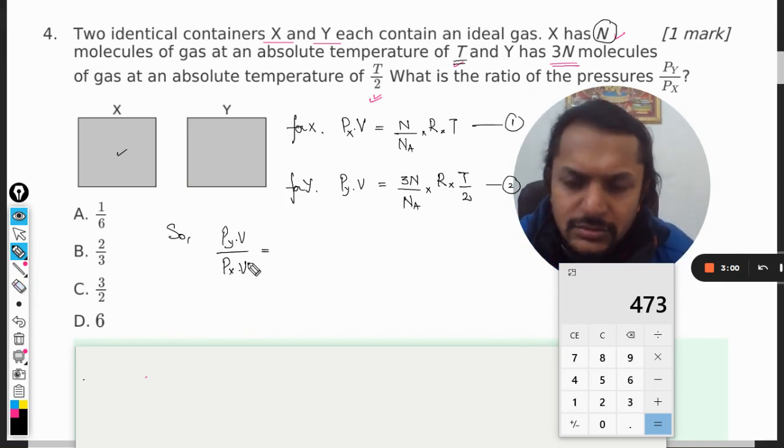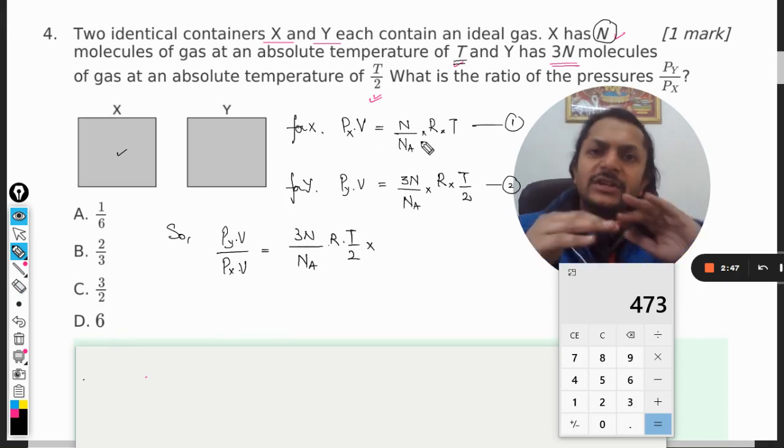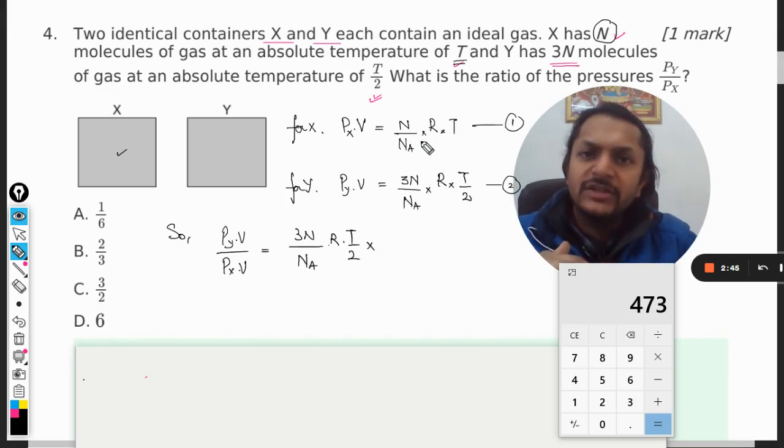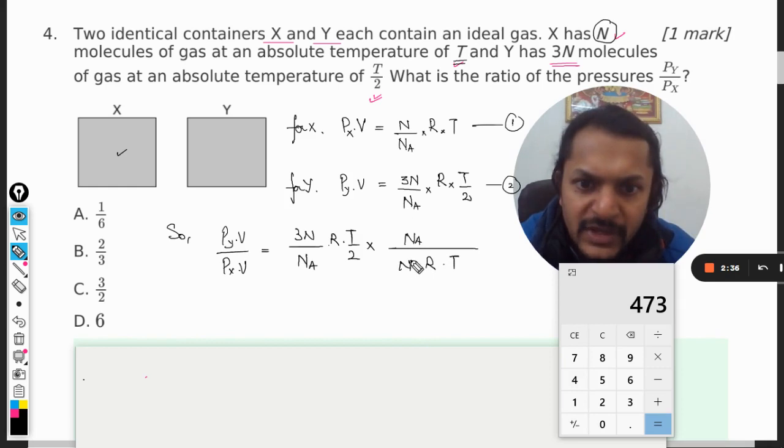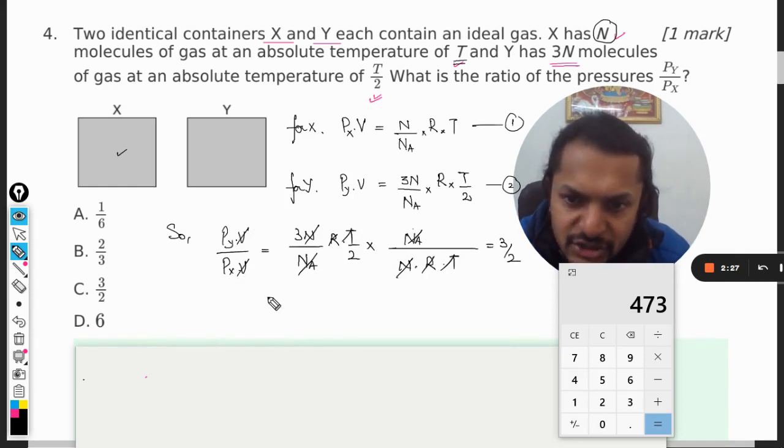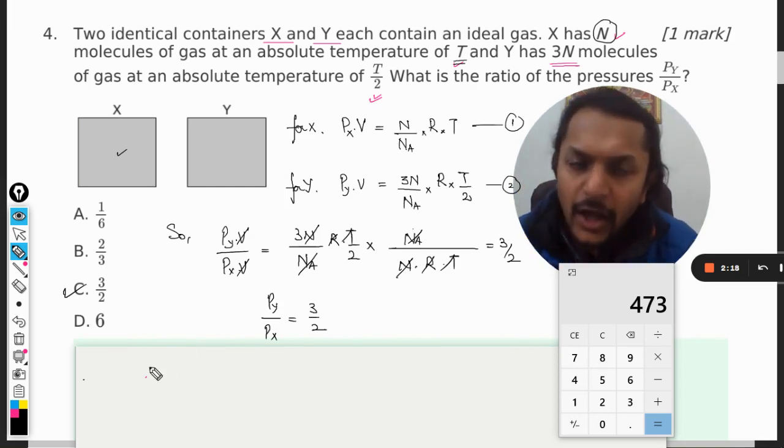So this will be 3N divided by Na R T/2. Now this was the second equation and it was supposed to divide it, so it means we need to multiply with the reciprocal of this. So the reciprocal is Na will become the numerator, N into R into T, and all these things will get cancelled out and it will be 3/2. And V and V is also getting cancelled, so we get Py divided by Px is equal to 3/2, and C should be the answer for this.